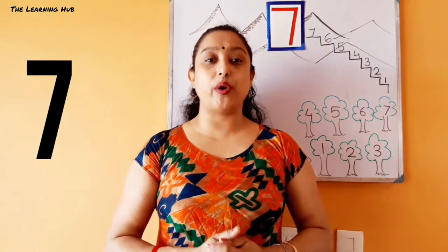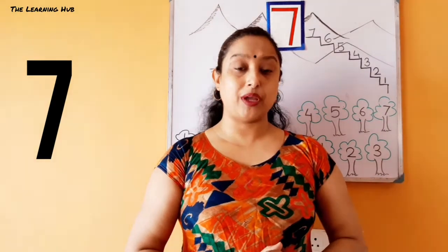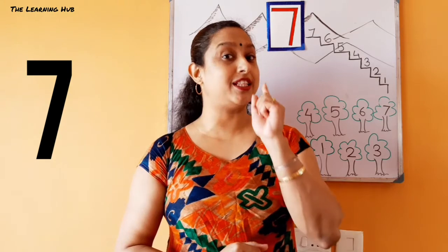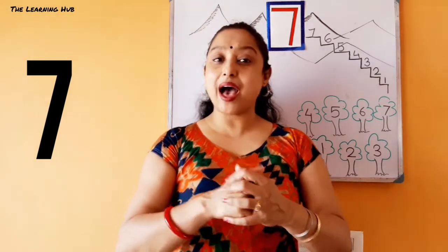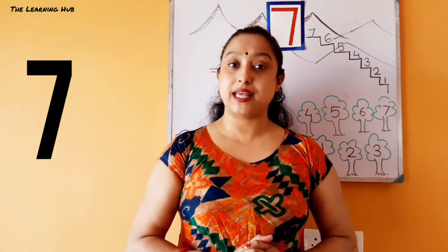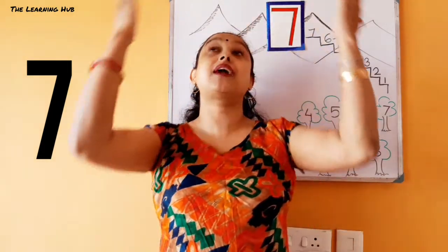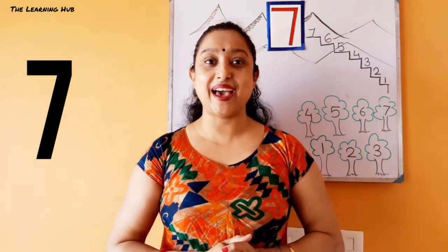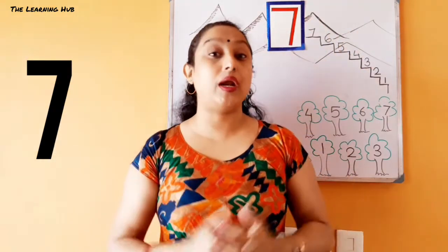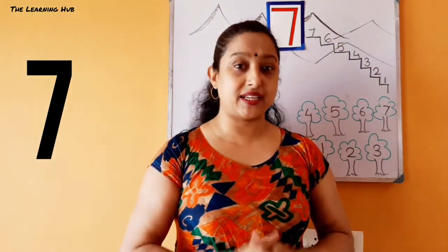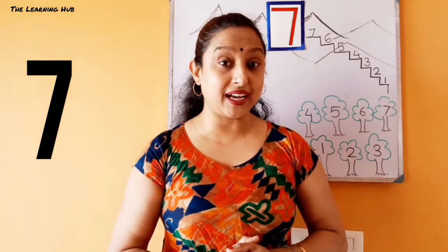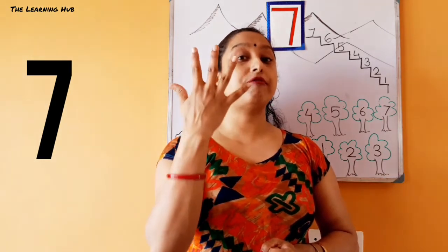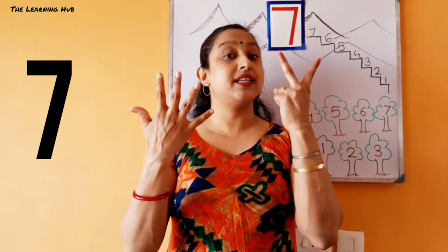Children, now we are going to do an amazing activity! But before that I will tell a riddle. Listen very carefully, then solve it. I have seven colors and I am seen in the sky - who am I? Think, think! Yes - rainbow! Rainbow has seven colors. How many colors? Seven colors! One, two, three, four, five, six, seven.